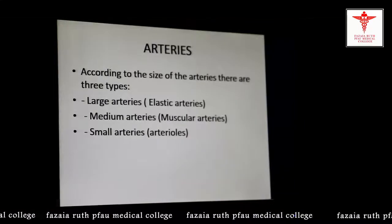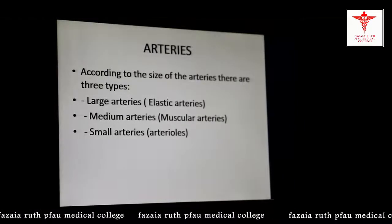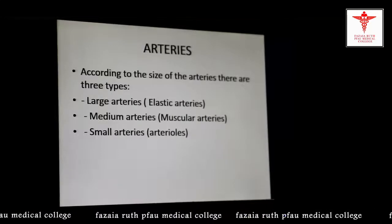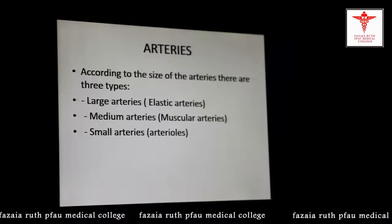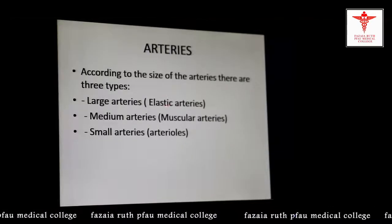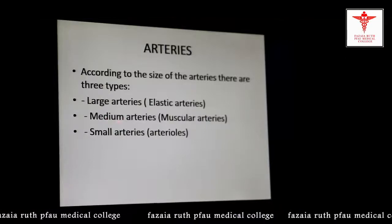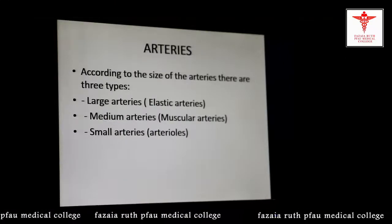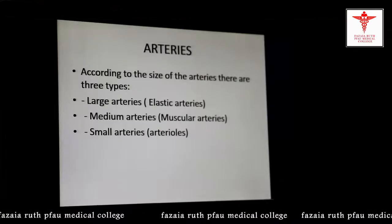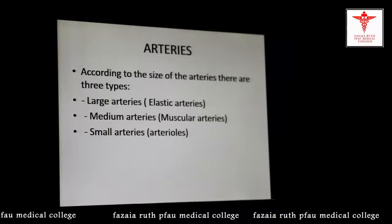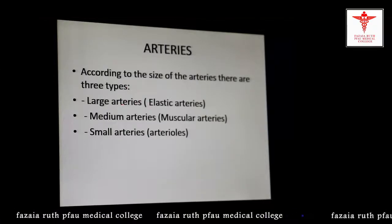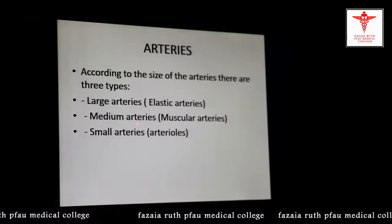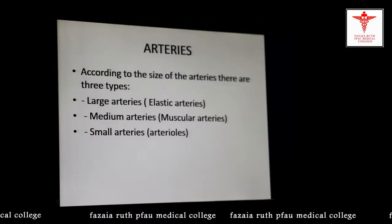Arteries are divided into three types depending upon the size. Number one is the larger arteries, known as elastic arteries. Then there are the medium-size arteries, known as muscular arteries, and the smaller arteries, known as arterioles. We will now see the histological features of the elastic artery and the muscular artery and compare the differences between the two.